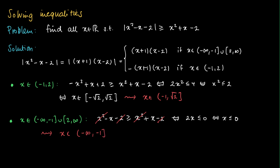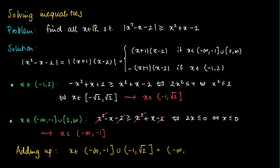Adding up the two cases and taking the union, x is a solution if and only if it is contained in minus infinity to minus 1, where minus 1 is included, union the left-open interval minus 1, square root of 2. But of course, taking the union of those intervals, we get minus infinity to square root of 2.